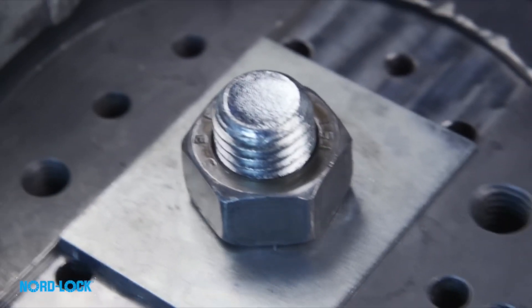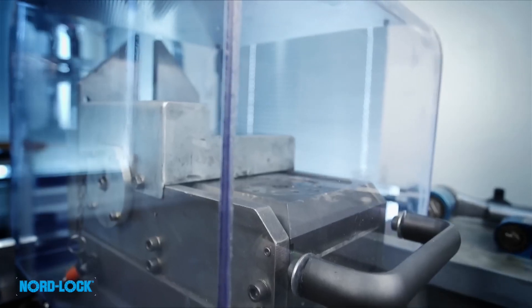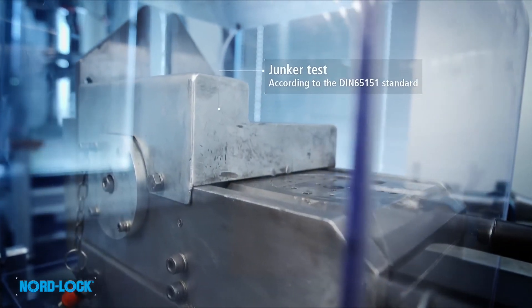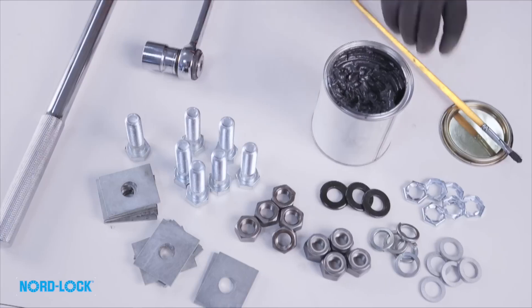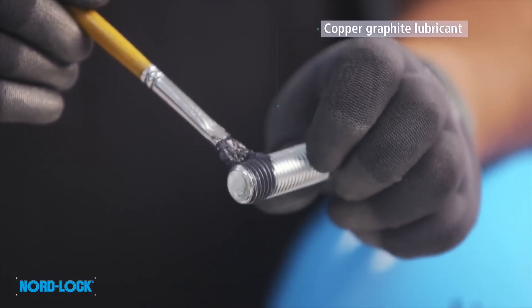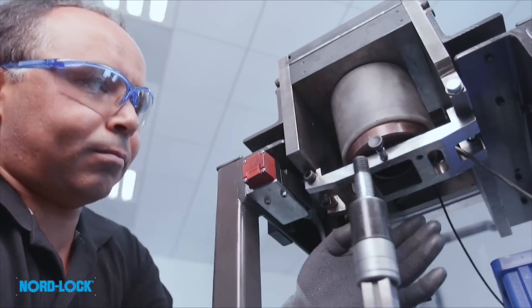Because vibration is everywhere, and vibration can loosen bolted joints. The Junker test is the most severe vibration test for bolted joints, used to compare how different locking methods behave under transverse vibrations underneath the bolt head, while continuously measuring the clamp load.